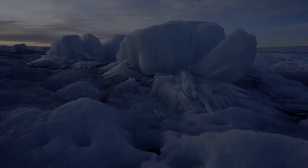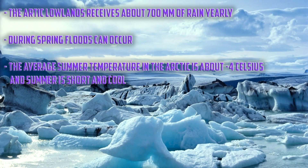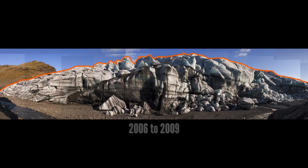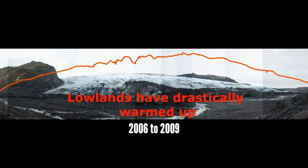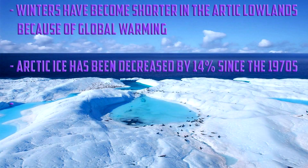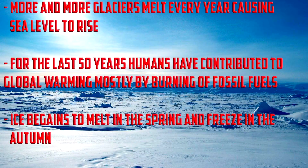The Hudson Bay Arctic Lowlands receive an average of 700 millimeters of rain yearly, most of it in the south. During spring, minor floods are expected, allowing small shrubs to grow. The average summer temperature is around negative 4 degrees. Global warming has only begun affecting the Hudson Bay Arctic Lowlands since the mid-1990s. The lowlands have warmed up by an estimated 3 degrees Celsius in the past few years, which is warm enough to begin to lose ice, causing winters to be shorter, more evaporation, and lower ice levels. The ice now begins to melt in spring and resumes again in autumn.